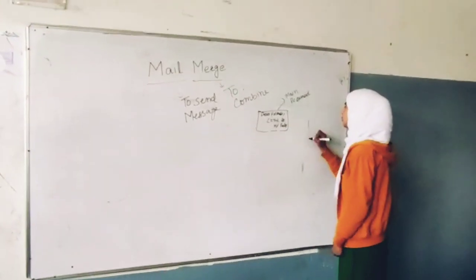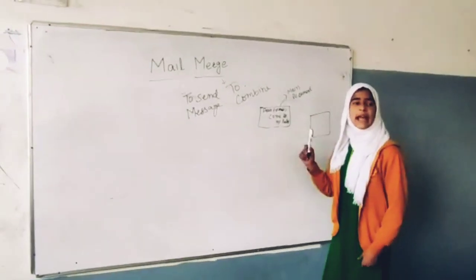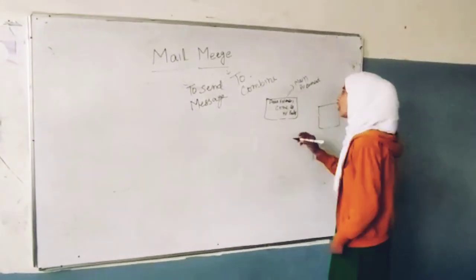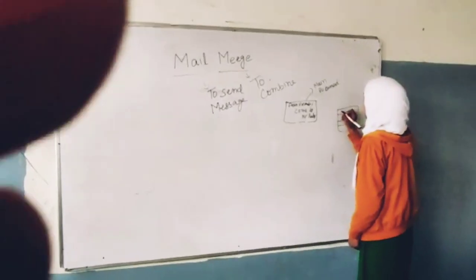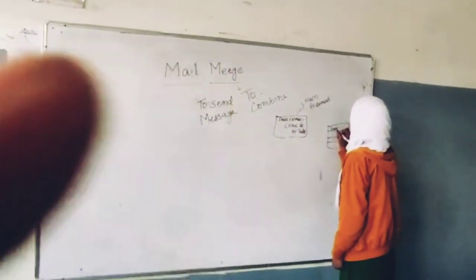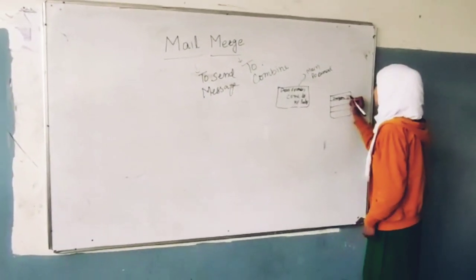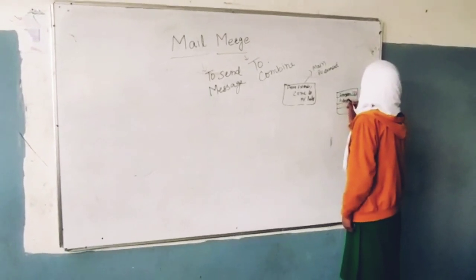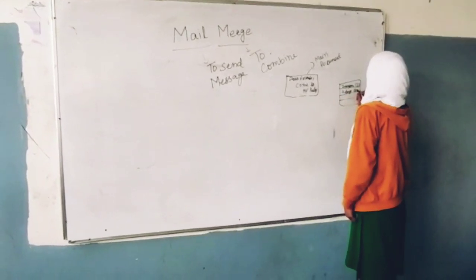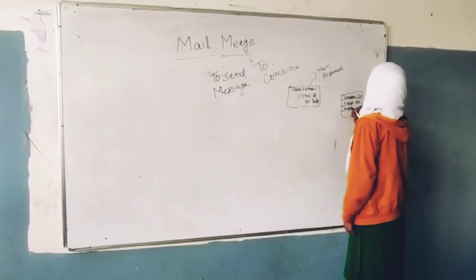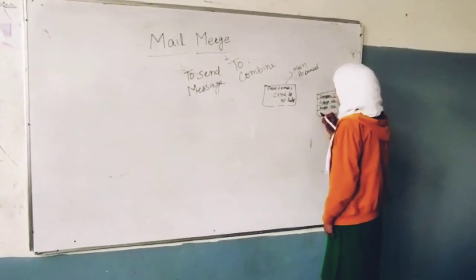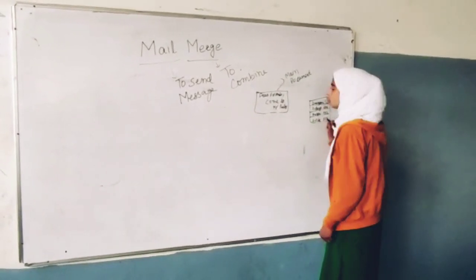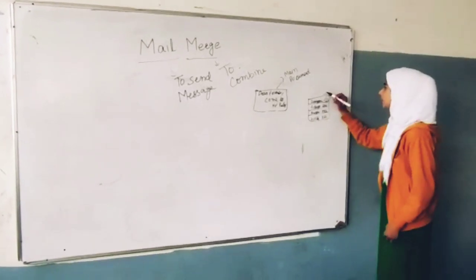And we have to connect it to a data source from where I will take the names, addresses, and contact numbers of my friends whom I have to send this message. For example, here is Ziyan with her number, here is Adiya with her number 234, here is Bershina with her number 432, and here is Aila with her number 323. So this is our data source.